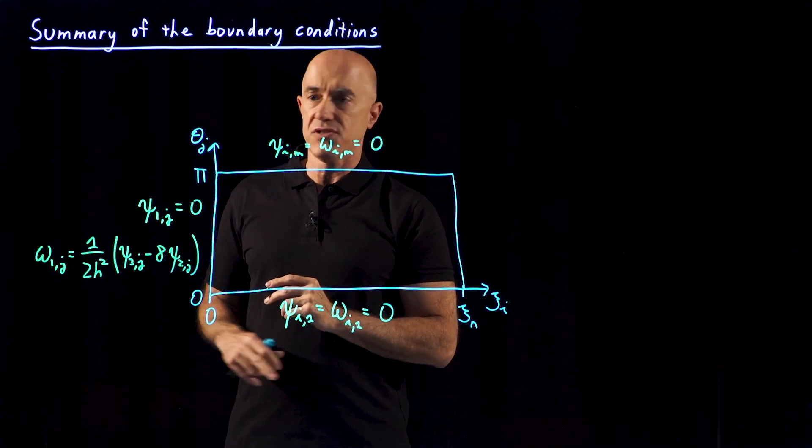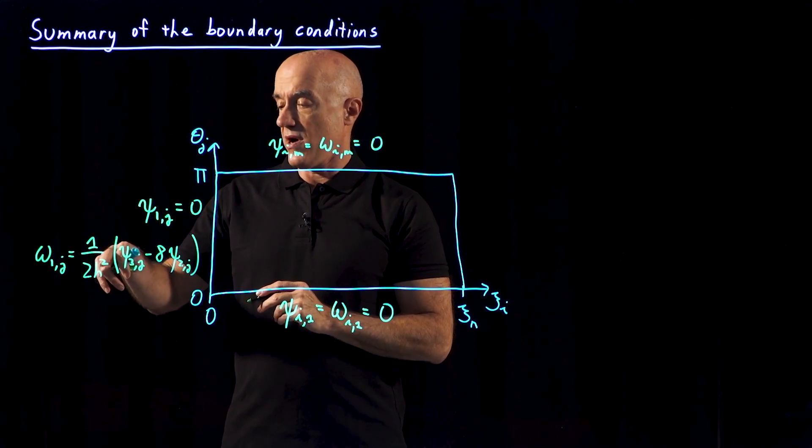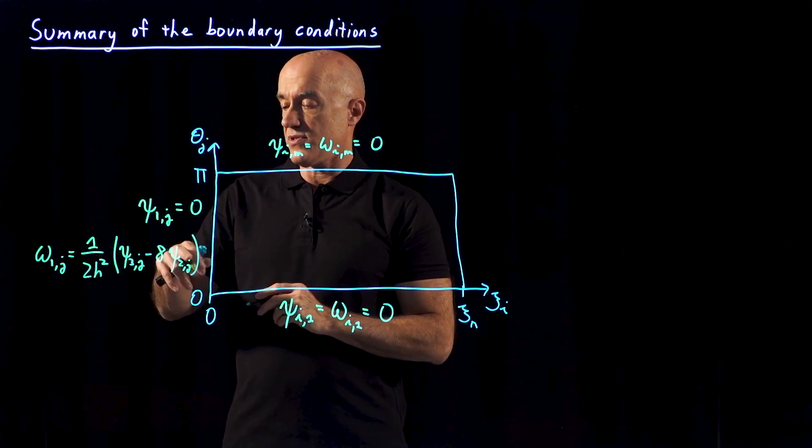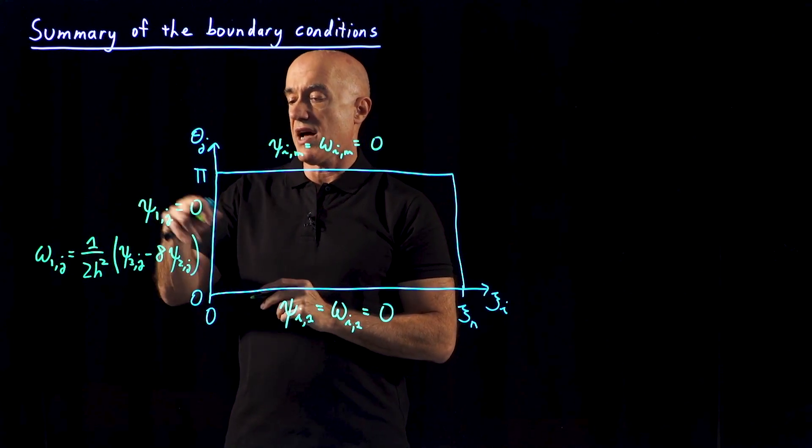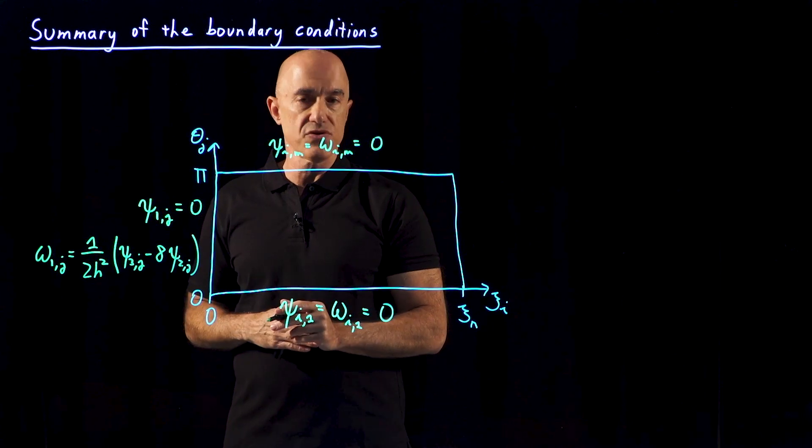You have a division by h squared here. So h is very small, so that better be balanced with psi being relatively small. We know psi is 0 on the cylinder. So this is a crucial boundary condition.